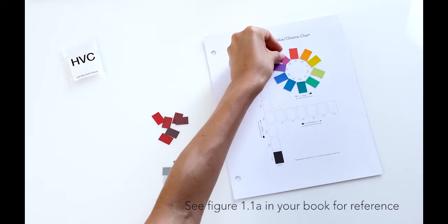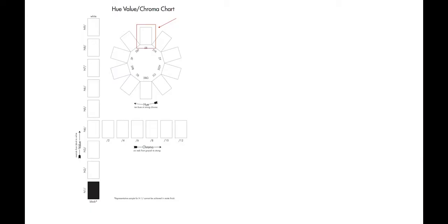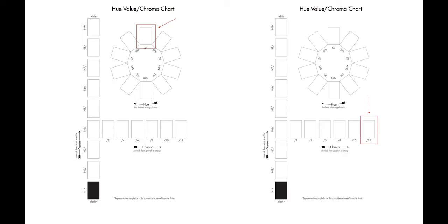Arrange the ten hue chips on the hue circle, but don't affix them yet. Note that the vivid red chip belonging in the hue circle is lighter than the most vivid one that belongs in the red chroma sequence row.